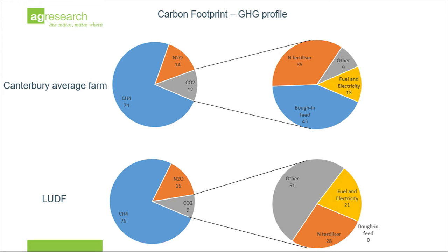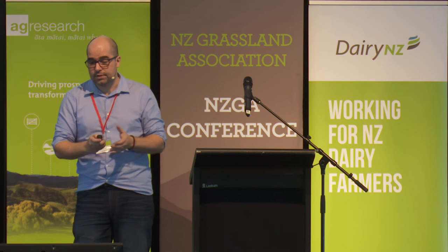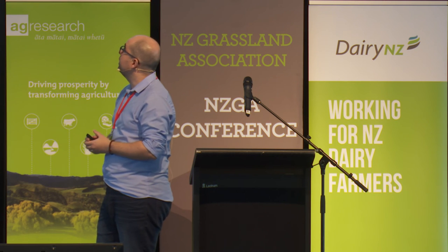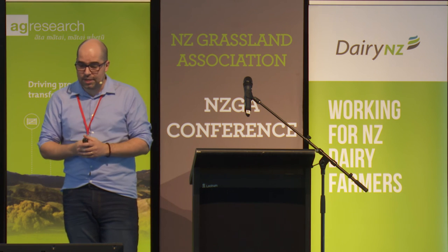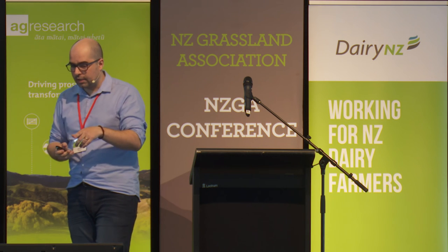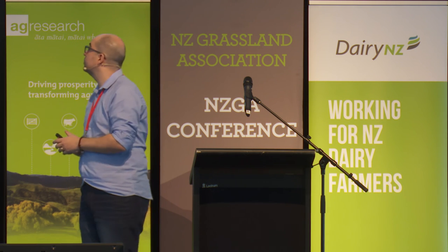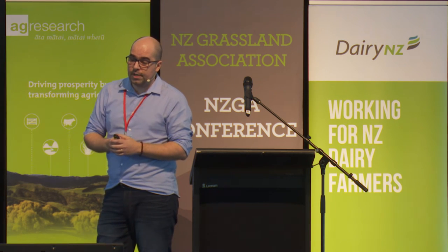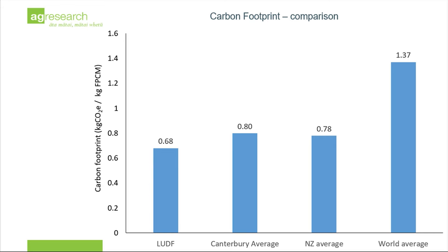Most of the CO2 for the average farm comes from the brought-in feed. For Lincoln University Dairy Farm, that shifts to 'other,' which is precisely the wintering-off and the replacements. That's one of the main differences influencing the carbon footprint of these two farms. Putting this in comparison, Canterbury average is very near the New Zealand average, based on work from Dr. Stuart Leitgard from AgriSearch. Even New Zealand is very efficient — especially the pastoral-based farm — compared to the world average.